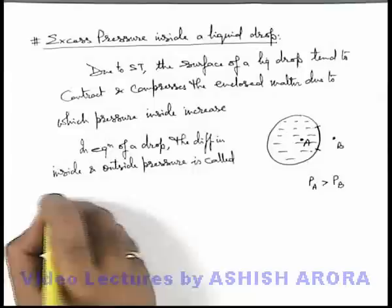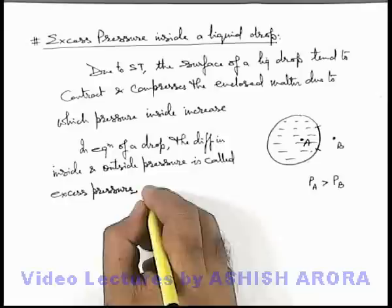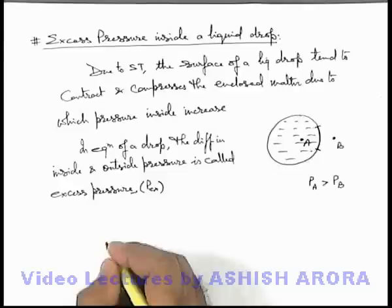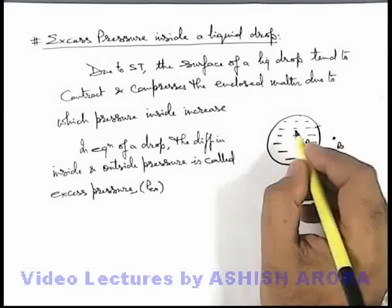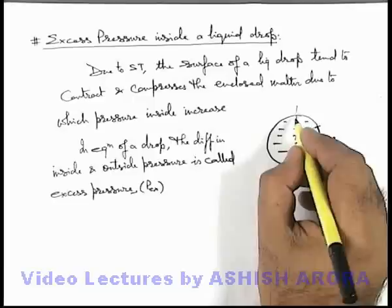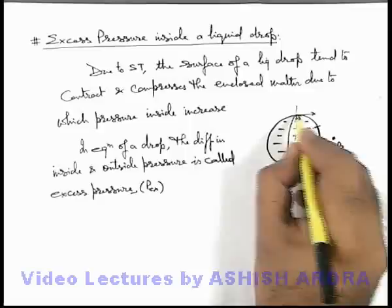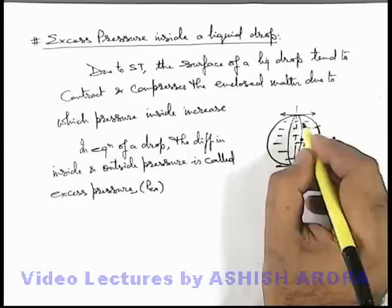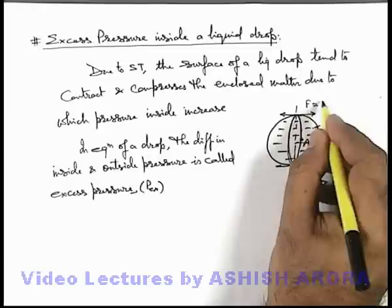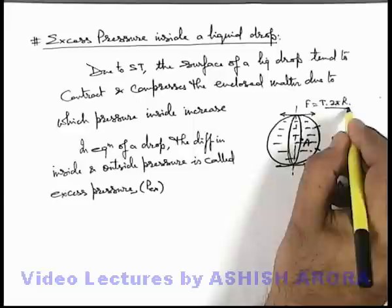Now we are going to calculate this excess pressure, which we can denote as P_excess. To find out the value of this P_excess, let's consider that we split the drop into two hemispheres — one is the left and the other is the right. At the edges of these two hemispheres, the surface tension will be exerting a force which is tangential to the two parts of the hemisphere. As the circumference of the base of the hemisphere is 2πr, we can simply write the force of surface tension will be T into 2πr, acting on each hemisphere due to the surface tension.